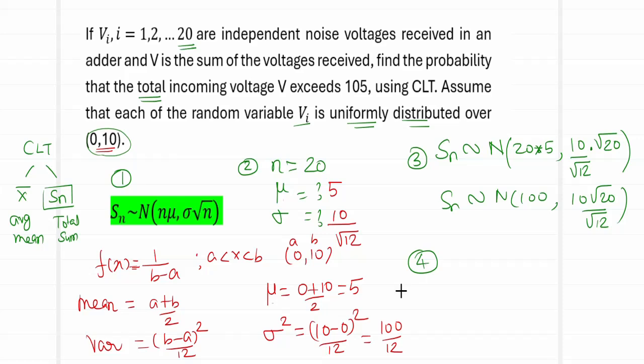Step number 4. What is step number 4? Identify the question requirement. What is the question requirement? The total incoming voltage V. Find the probability that the total incoming voltage V exceeds 105. We have to check that the total incoming voltage V exceeds 105, the probability of this action. We want probability of the total incoming voltage V exceeds. How to write exceed as greater than? What is the requirement? 105. So I want probability of V greater than 105. This problem is in V has to be converted to the problem of Z.